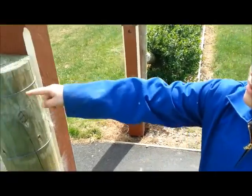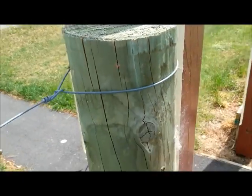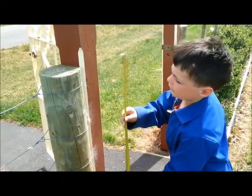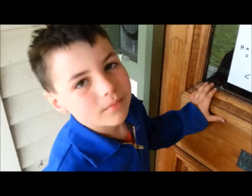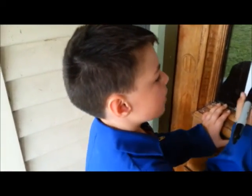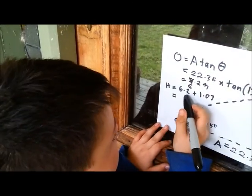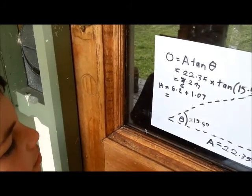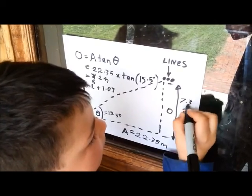Here's the dot from the laser. Now we're going to measure how high it is from the ground. So the total height is 6.2 plus 1.07, which is close enough to 7.3 to say that this is 7.3 meters.